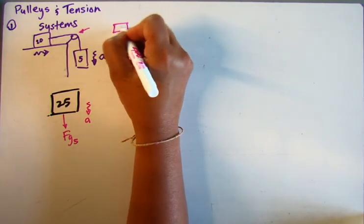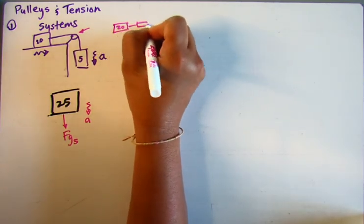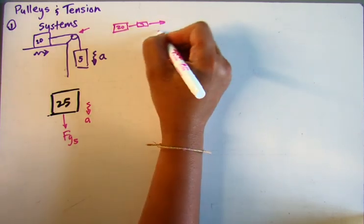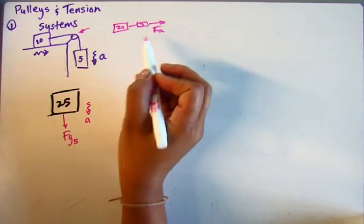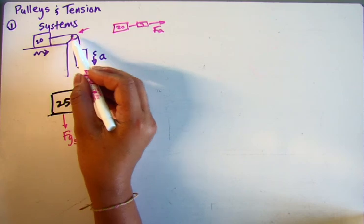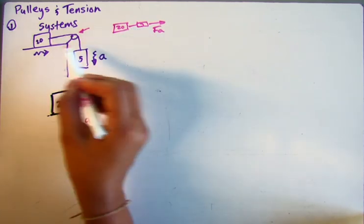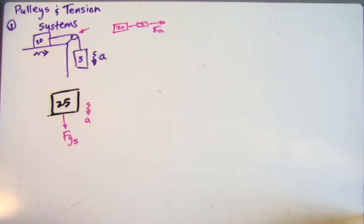These two problems are very similar. This pulley simply puts a kink in this, but it doesn't change how both of them are going to accelerate together.